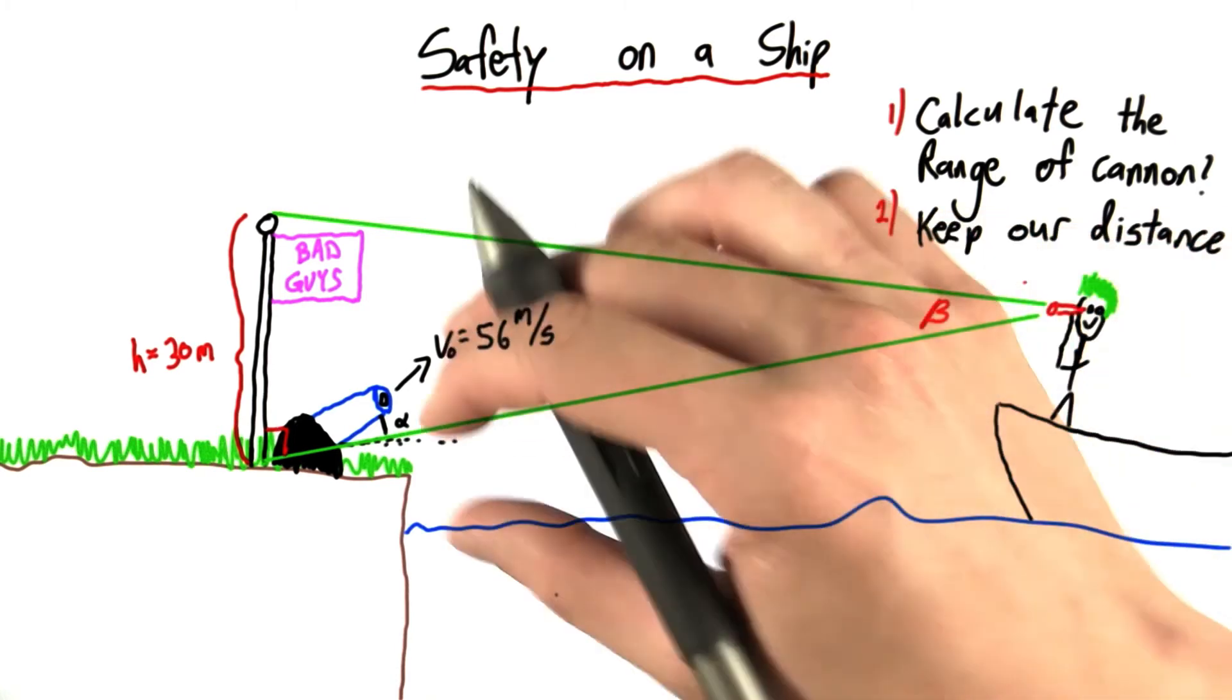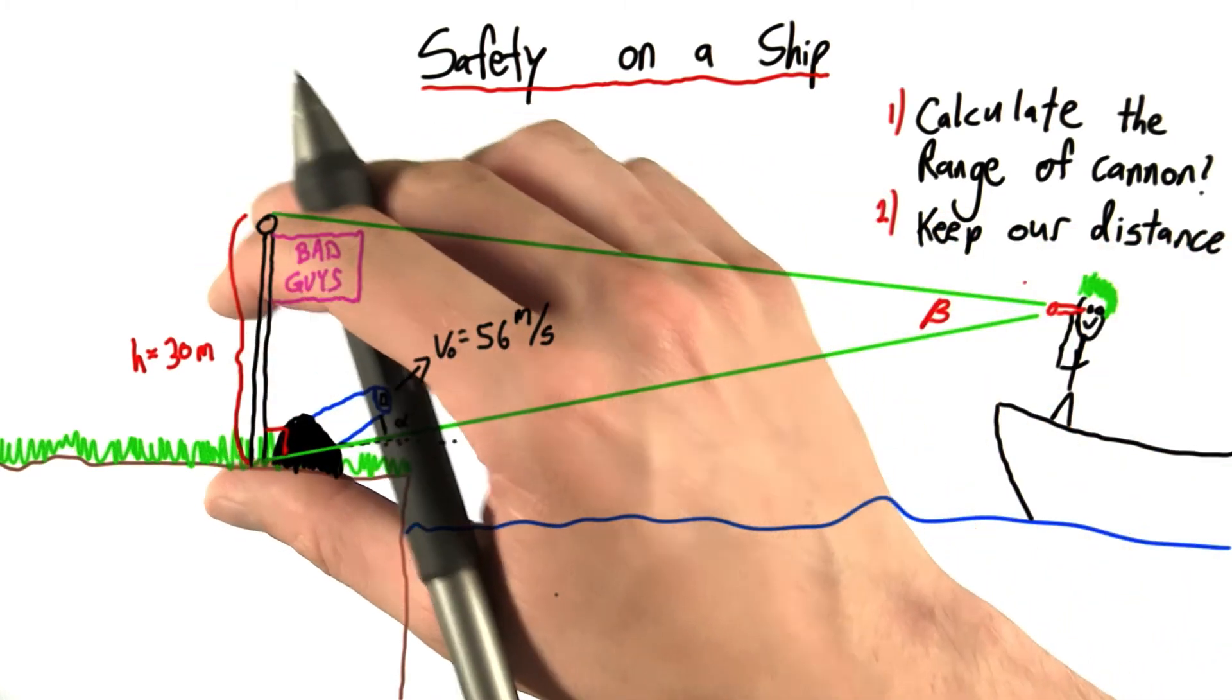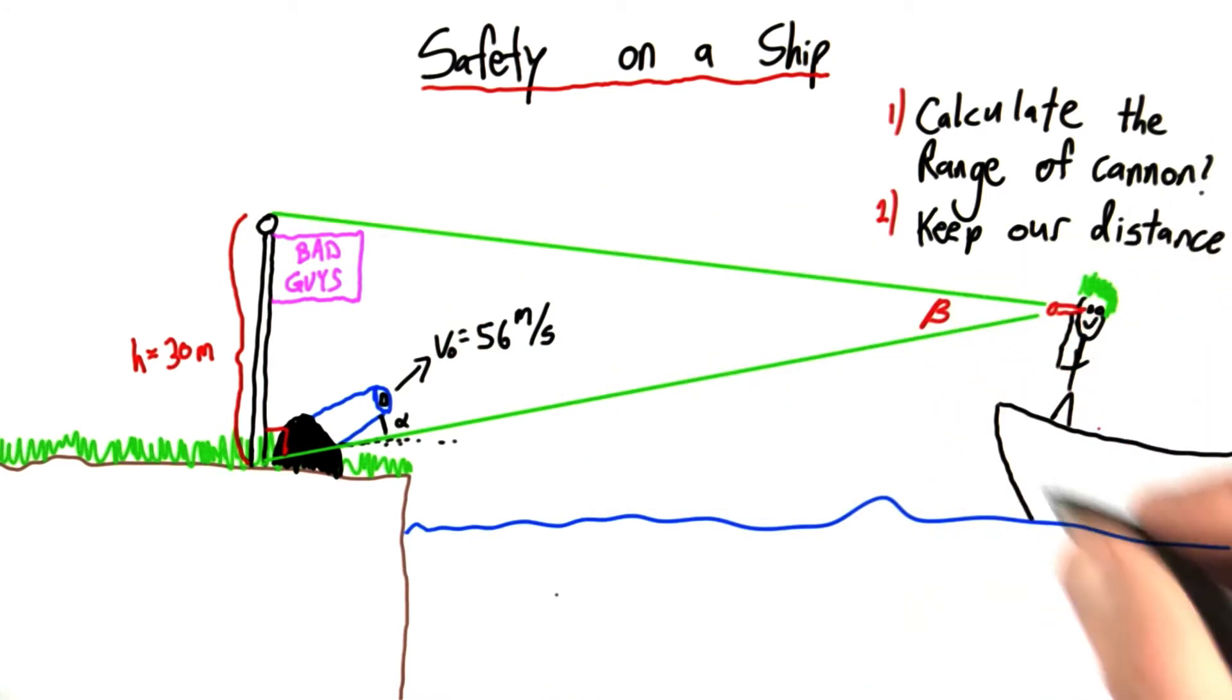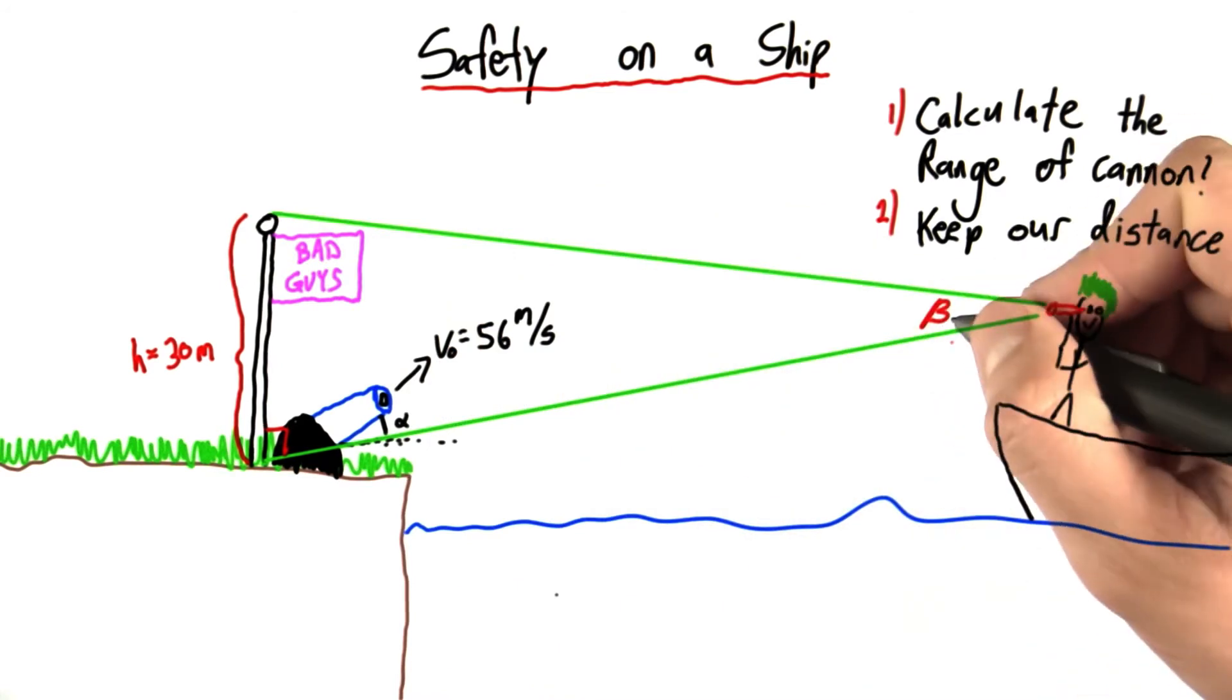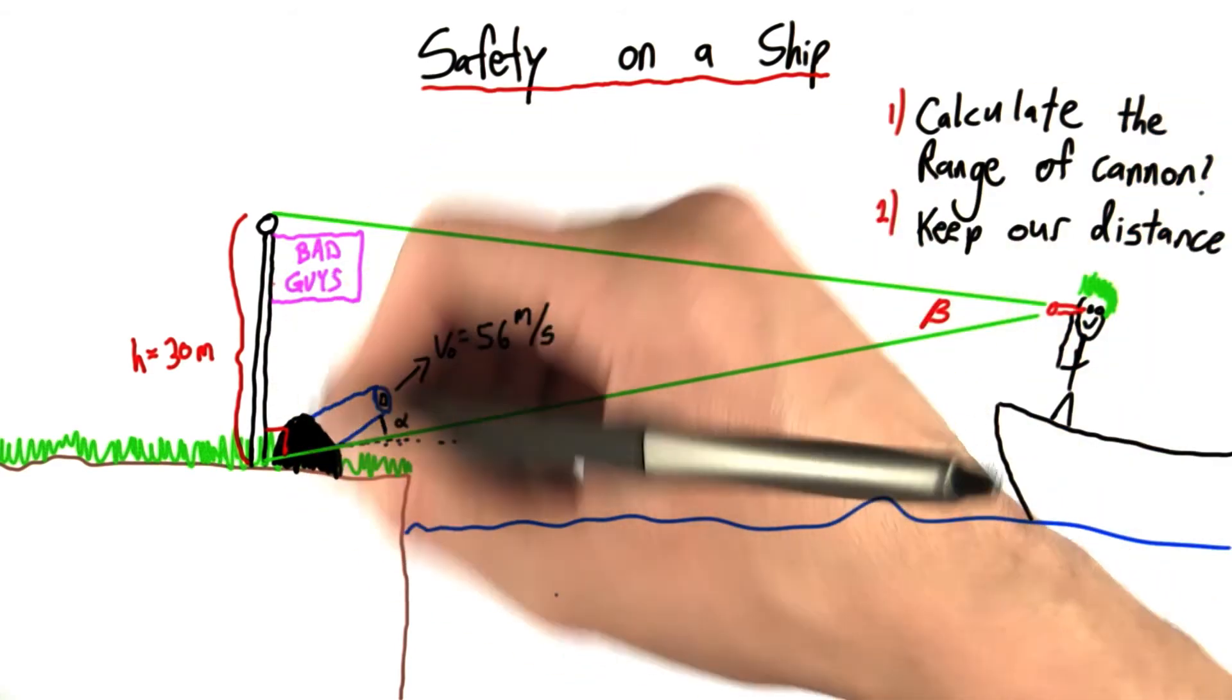Now, clearly if the boat is really close to the shore, this flag pole will look very big. Beta will be large to our observer. And if the boat's very far away, beta will be small. The flag pole will look very small from far away.